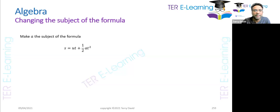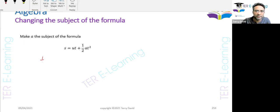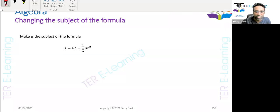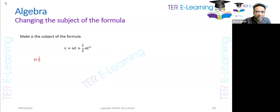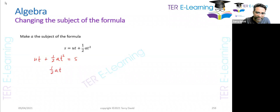Let's look at the next one — make a the subject of the formula again. I need a on the left hand side, so I'm going to write this as ut plus one half at squared is equal to s. Now we're trying to make a the subject, so we should get rid of ut on the left hand side. So one half at squared is equal to s minus ut.